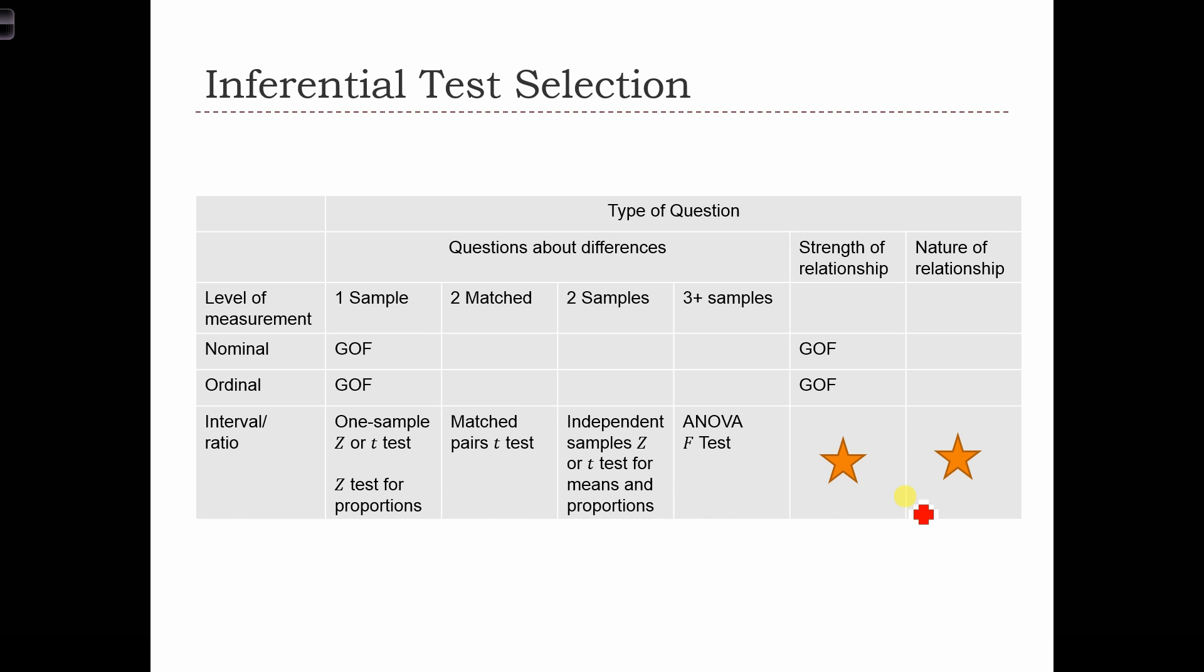In this class, we're going to look at Pearson's Correlation Statistic, which allows us to measure the strength and nature of a relationship between two interval or ratio measured variables.